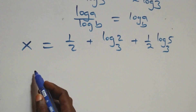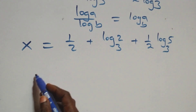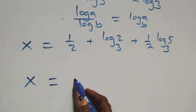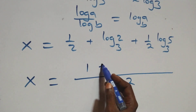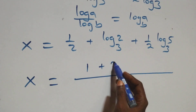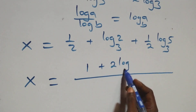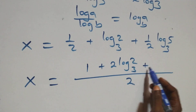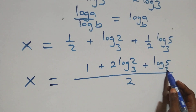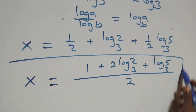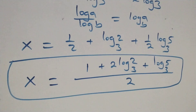We can bring this together as a single fraction. We have x equals to 1 over 2 times the quantity: 1 plus 2 log 2 base 3 plus log 5 base 3. Therefore the value of x is (1 plus 2 log 2 base 3 plus log 5 base 3) all over 2.